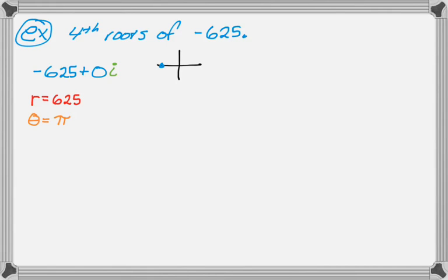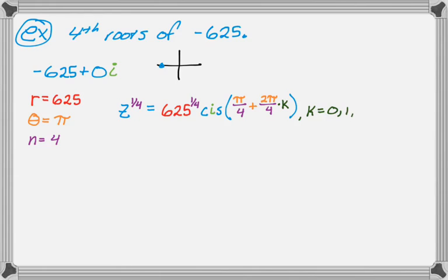And theta, based on observation, is equal to π. The problem is asking for fourth roots, so n is equal to 4. So if we call the complex number z, what we're doing is z to the one-fourth equals—and then it's all about that formula, which you really just need to memorize. So it's going to be r to the one-over-four, so 625 to the one-fourth, cis, and then it's π over 4. I'm breaking it up, so instead of doing (θ + 2πk) all over n, I'm doing θ over n, which is π/4, plus 2π/4 times k. And then in this case, fourth roots, so k can be 0, 1, 2, or 3.